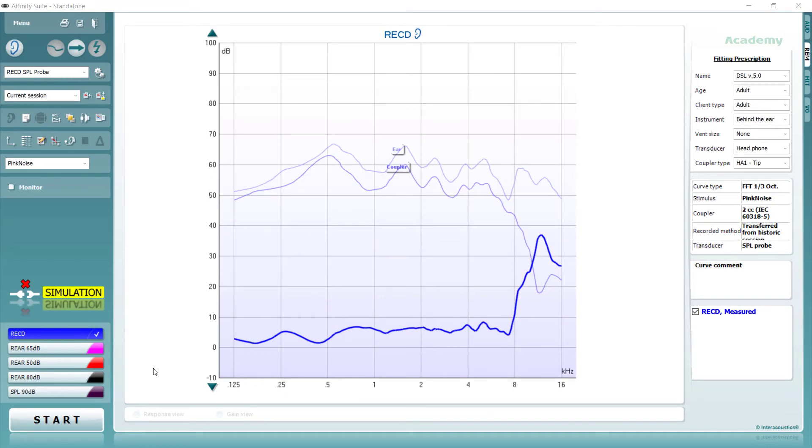The gold standard of RECD measurements is to perform the measurement in each individual ear. However, this is not always possible due to patient cooperation. Therefore, it is possible to perform the measurement in one ear and copy it across to the other. This should only be performed when the anatomy and middle ear function of both ears is similar. To copy the measurement to the opposite ear, you can right-click on the measurement in question, which is a left-sided RECD in this case, and select Transfer to Right Ear.